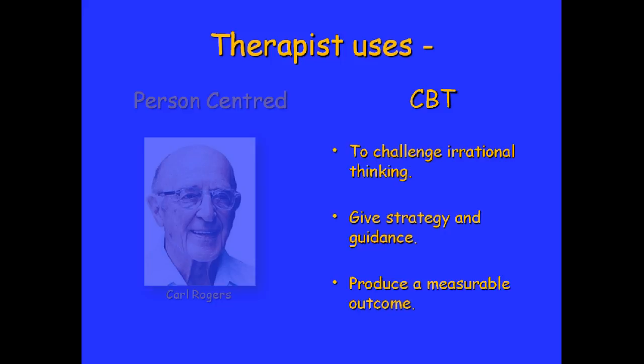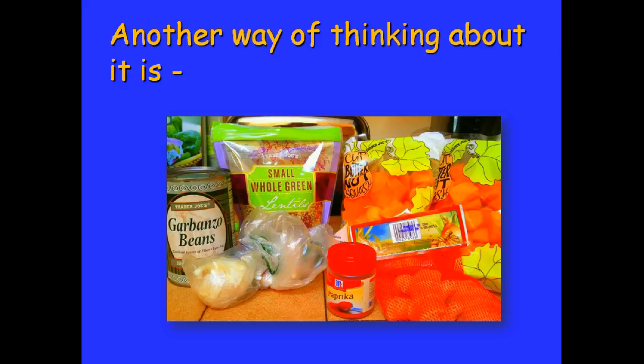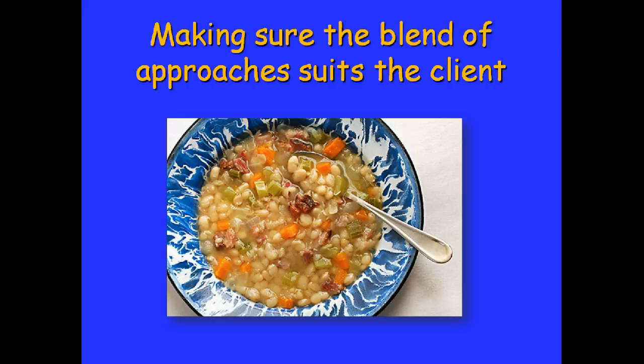Another way of thinking about integrative therapy is this picture — it's the ingredients for soup. The ingredients don't really look that appetising on their own, just as the individual therapies are separate items placed on a table. It's very much about the way the practitioner blends them. Done properly, it's about making sure the blend of approaches suits the client. Here we have a tasty soup made from those different ingredients — the skilled therapist using a multidisciplinary approach can blend the therapies to produce something unique to the client. Food for thought.